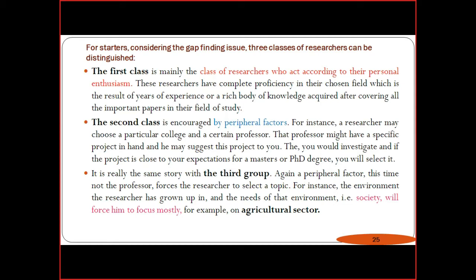The third class is related to society — people forced to focus on social problems. For example, in the agricultural sector, where agricultural issues need solving, people try to find solutions. These are social types of research — trying to solve problems at minimum cost with new concepts and approaches to overcome the problem itself.